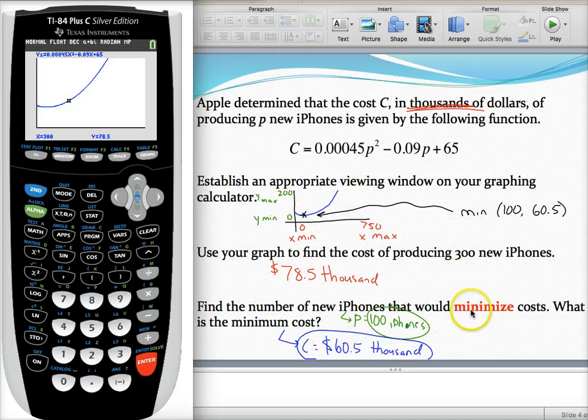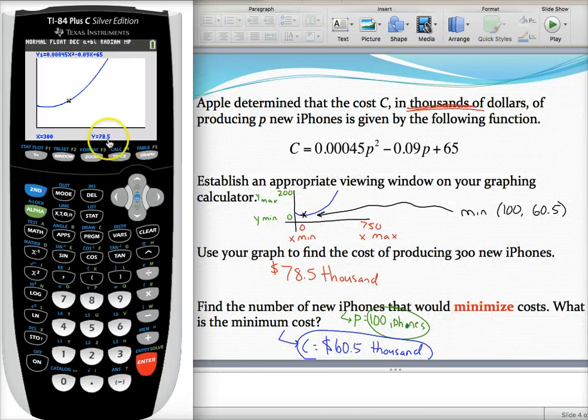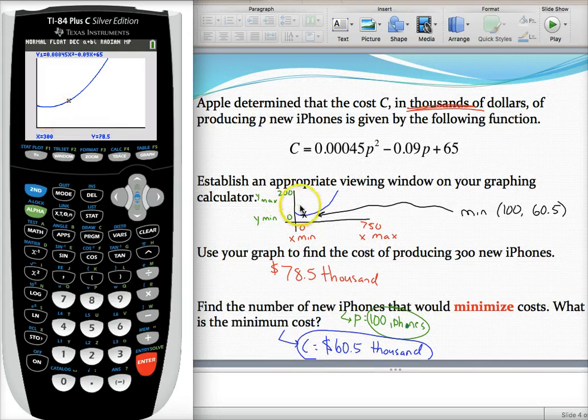My next question, my last question, is find the number of phones that will minimize the cost. They're looking for a minimum, or sometimes a max—in this case, a minimum. Either way, they want to find a vertex. We want to find the coordinates of that vertex.